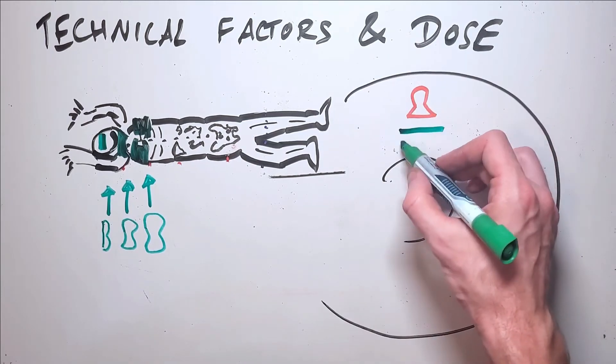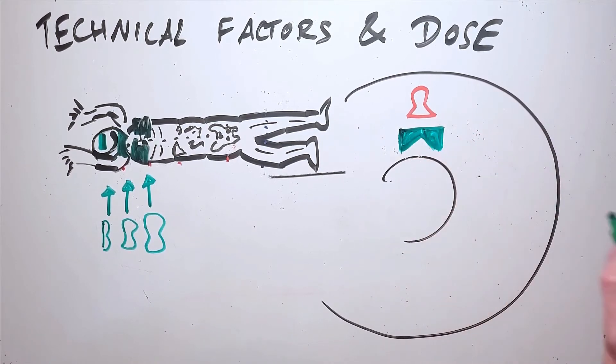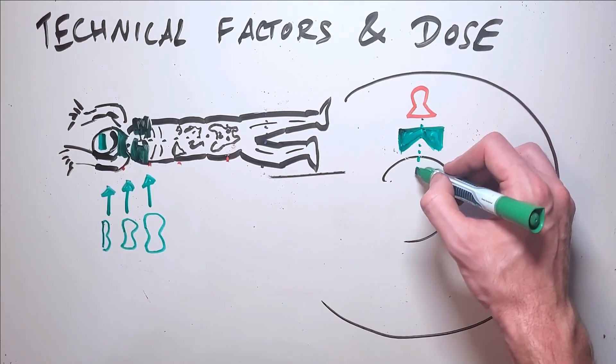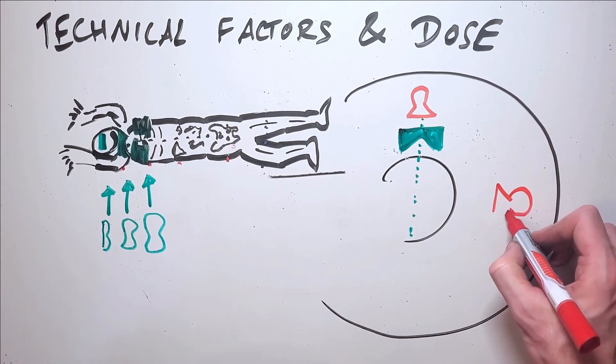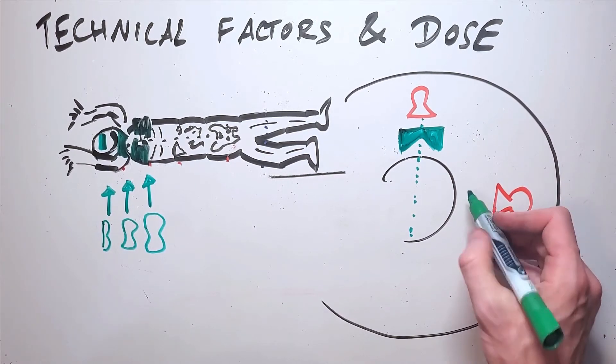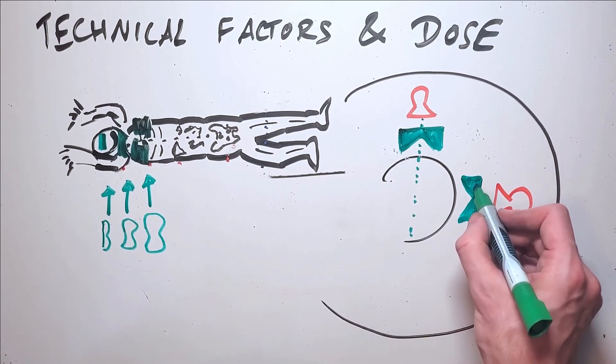Filtration plays an important role in reducing radiation dose. Filters absorb low energy photons leaving the tube, and in CT we use a bowtie filter as we discussed in an earlier video. The bowtie filter absorbs a greater number of photons at the periphery of the patient to reduce dose and ensure a more uniform distribution of photons reaching the detector.